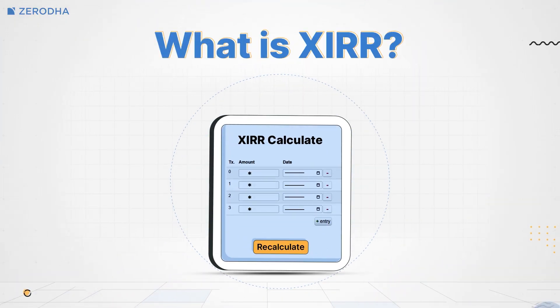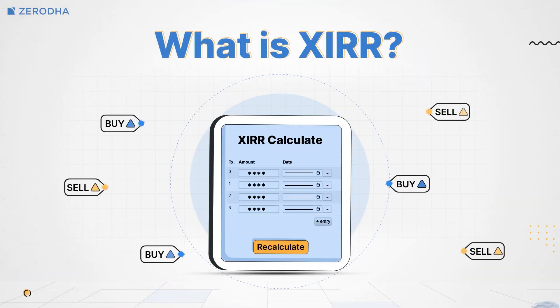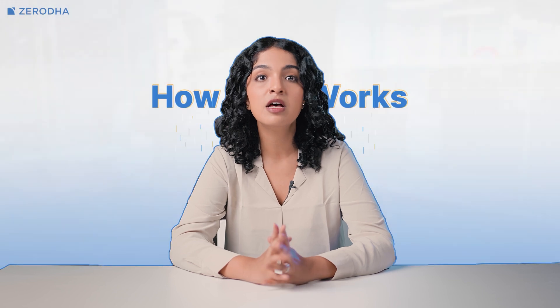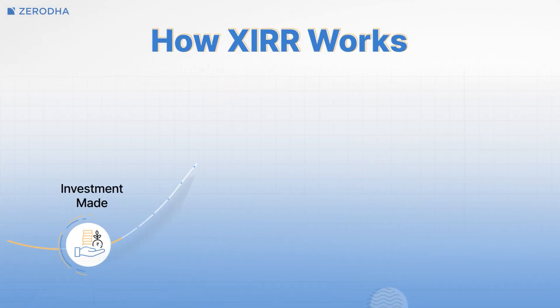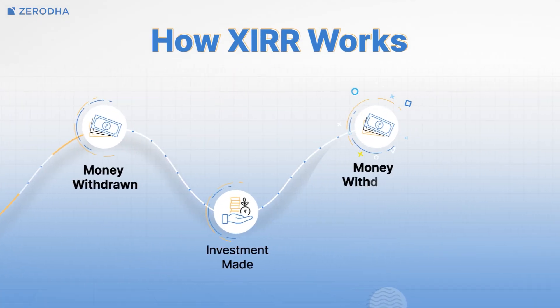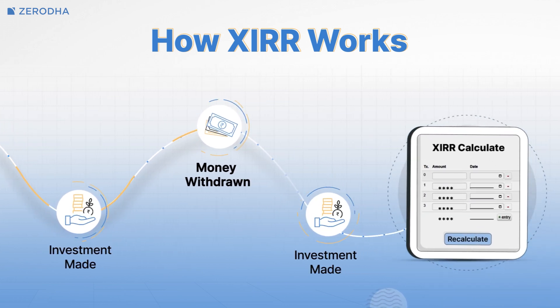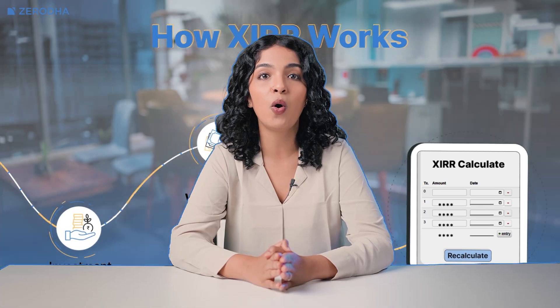XIRR is a way to calculate the annualized return on investments that don't have regular cash flow, meaning the amount you invest or receive doesn't happen at regular intervals. For example, if you put your money into an investment at different times and take some out at different times, XIRR helps you figure out the average yearly return. It takes into account all the different dates when you added or withdrew money to give you a single percentage that represents your annual return.